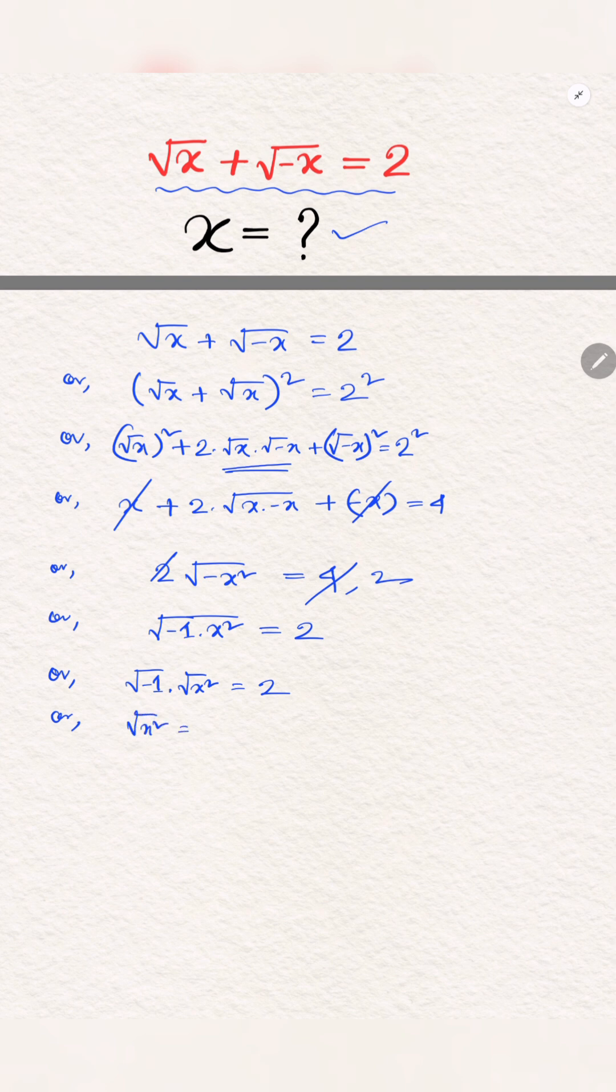So now divide 2 by root over -1, change the side, and now multiply both sides with root over -1. We get the result.